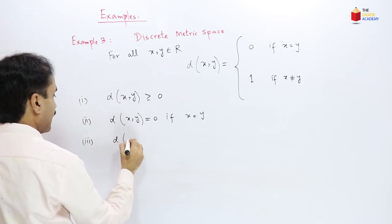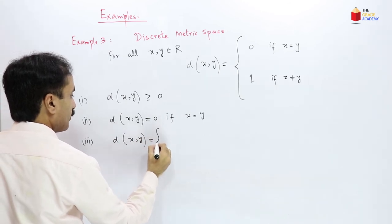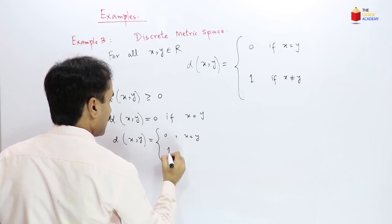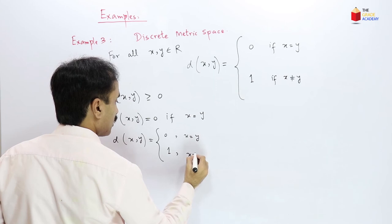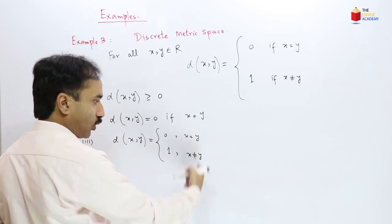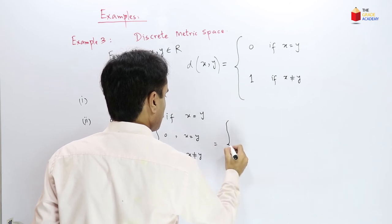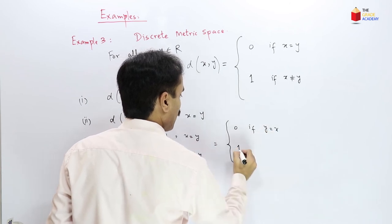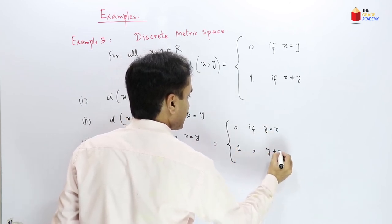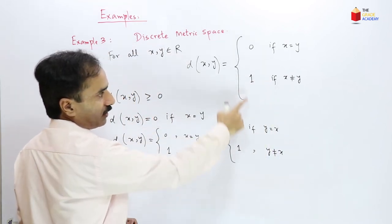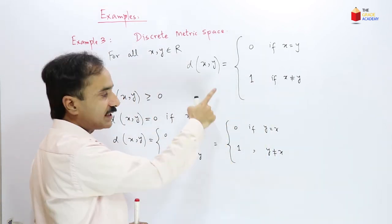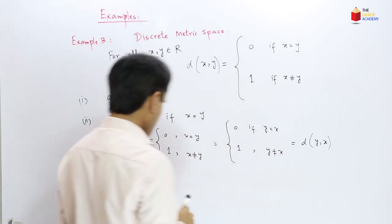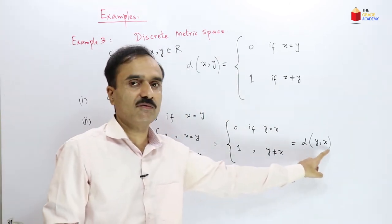Also, d(x,y) = 0 if x = y and 1 if x ≠ y. We can write this as 0 if y = x and 1 if y ≠ x, which by definition is equal to d(y,x). Hence d(x,y) = d(y,x).